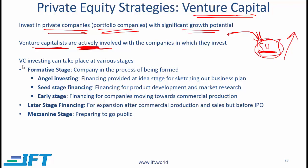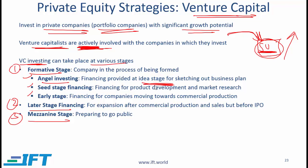From an exam perspective, you need to understand that VC investing can happen at various stages. At a high level there are three stages: formative stage, later stage, and mezzanine stage. Under formative, we have angel investing — financing at the idea stage — then seed stage financing for product development and market research, then early stage for companies moving toward commercial production. Later stage financing helps companies expand after commercial production has begun but before an IPO. Mezzanine stage financing is provided to help a company go public.